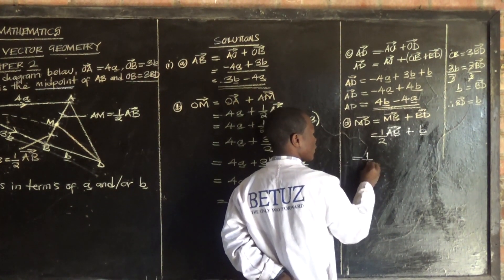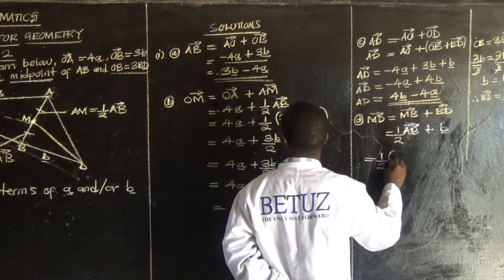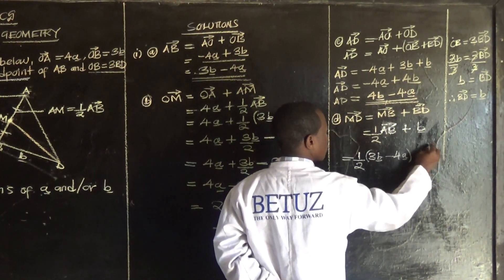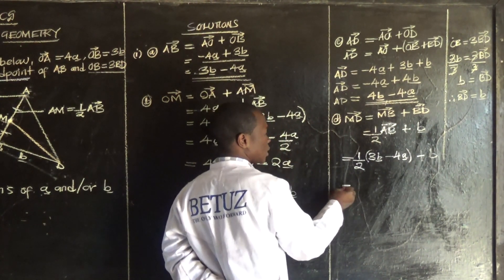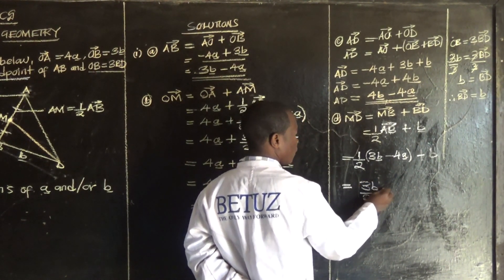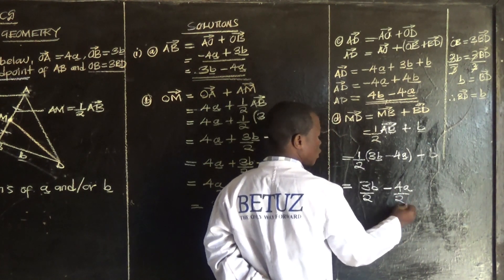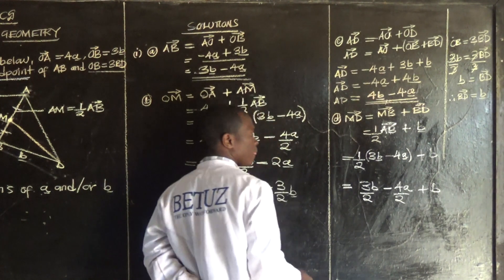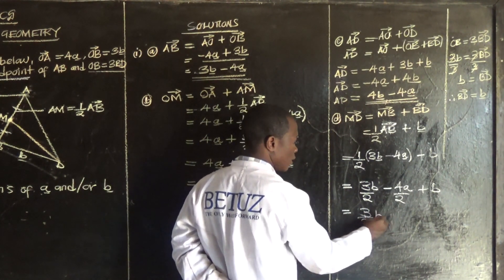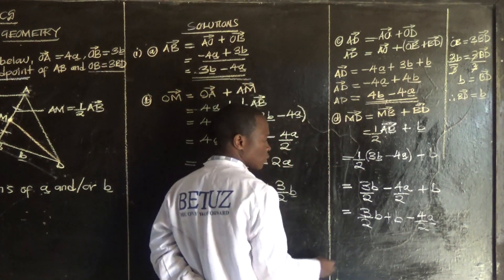So MD equals one half of AB plus b. What is our AB? That is 3 vector b minus 4 vector a. So it's one over two of (3 vector b minus 4 vector a) plus vector b.